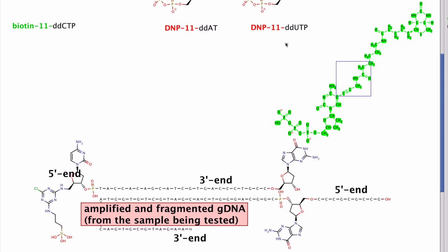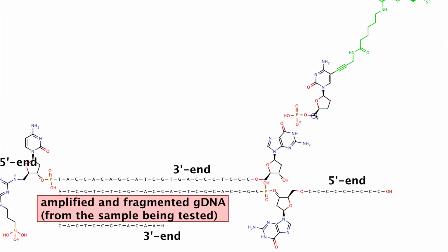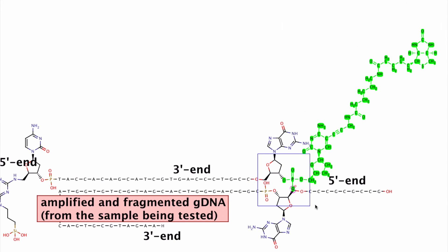The enzyme removes the triphosphate group and now makes the phosphodiester linkage to give us biotin label and green color when the SNP is G.